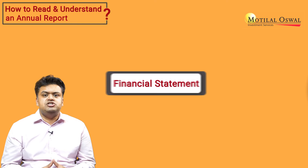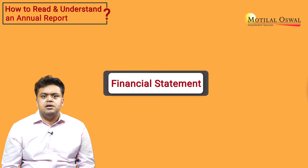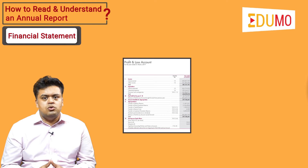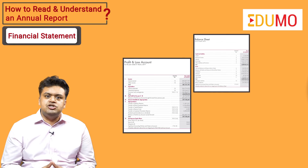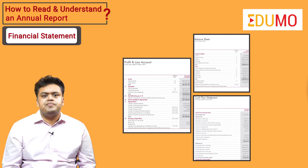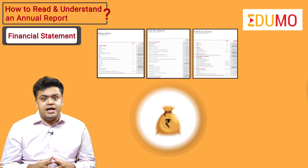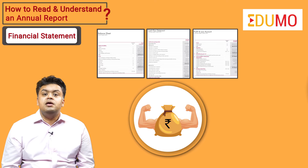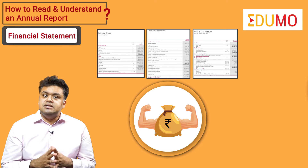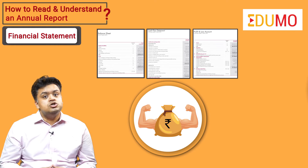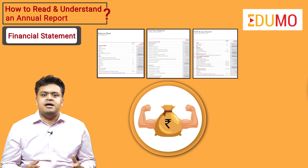The next is Financial Statement. This section provides detailed information on profit and loss account, balance sheet, and cash flow statement. It gives you the hint about the financial strength of the company. We have discussed in detail about the financial statements in other videos, so do check them as well.